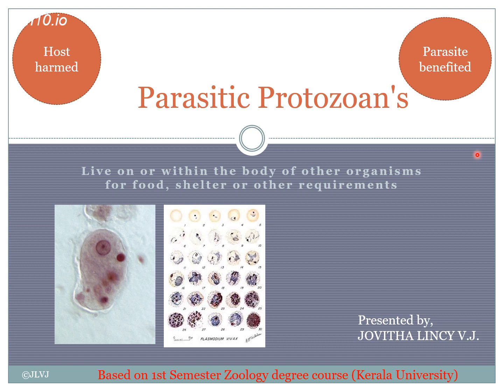In your book, two parasitic protozoans are mainly mentioned: one is Entamoeba histolytica, causing amoebic dysentery, and the other is Plasmodium species, which are known to cause malaria.